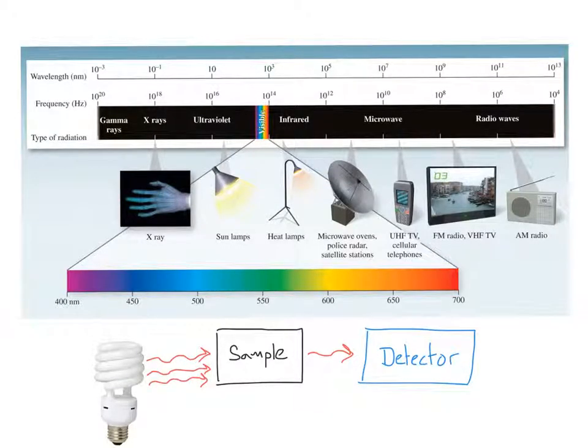Now, we're not limited to using the visible spectrum. There's the entire electromagnetic spectrum that we can use to interrogate materials and figure out what they're made out of.